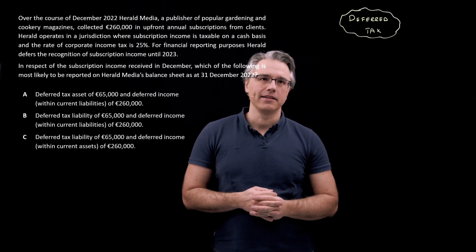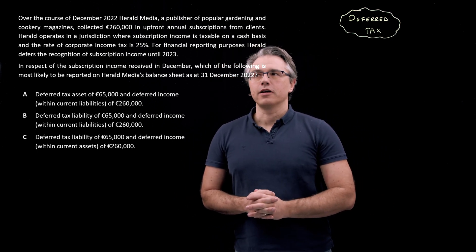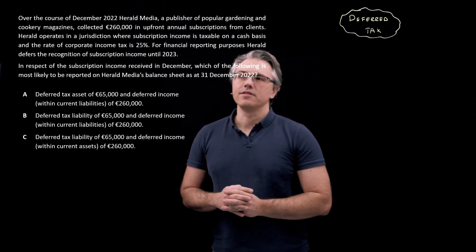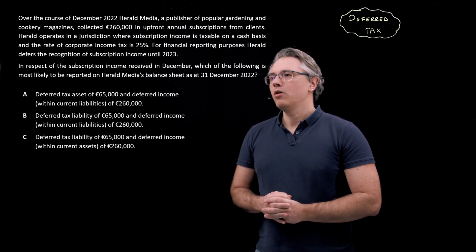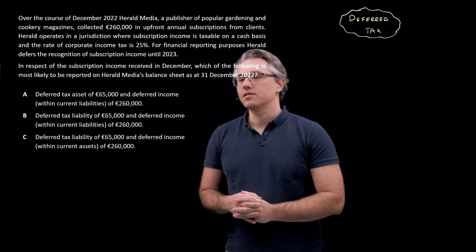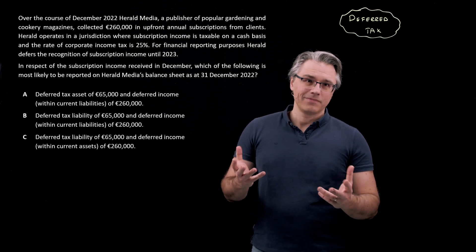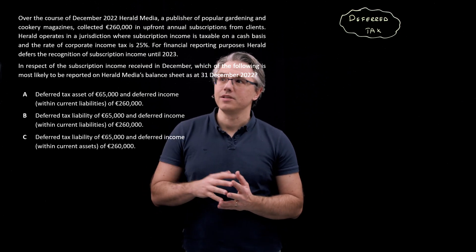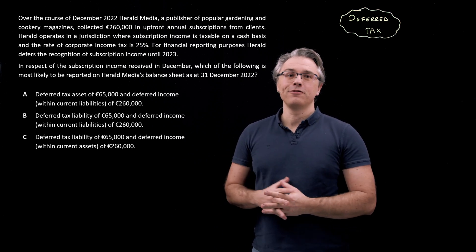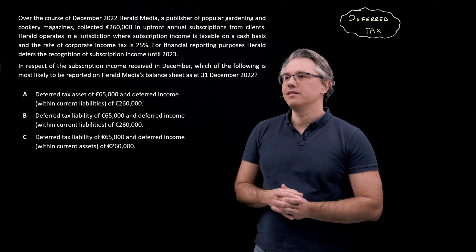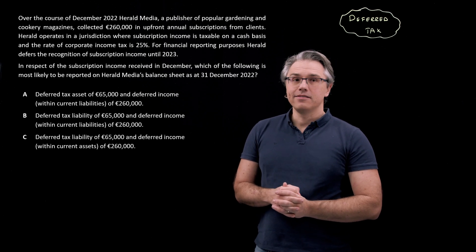This is the question I want us to have a go at. Over the course of December 2022, Herald Media, a publisher of popular gardening and cookery magazines, collected €260,000 in upfront annual subscriptions from clients. Herald operates in a jurisdiction where subscription income is taxable on a cash basis and the rate of corporate income tax is 25%. So basically when they receive the income, which was in December 2022, they need to pay tax on it for the year 2022, even though the subscription will relate to services that will be rendered over the course of the next year.